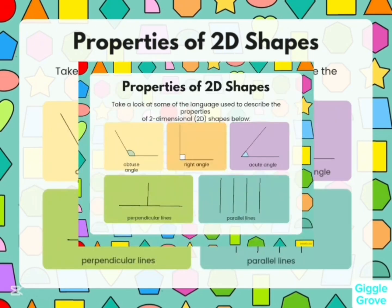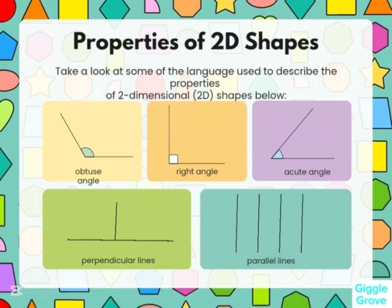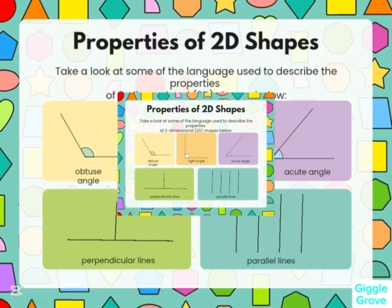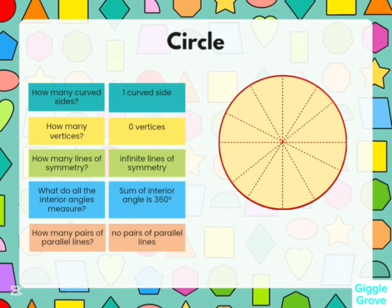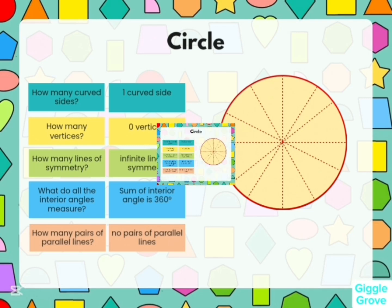We have discussed the straight lines and corners of 2D shapes. Now we will discuss properties of 2D shapes including vertices, symmetrical lines, angles, and parallel lines. Let's see the properties of a circle: one curved side, zero vertices, infinite lines of symmetry, sum of interior angles is 360 degrees, and no pairs of parallel lines.